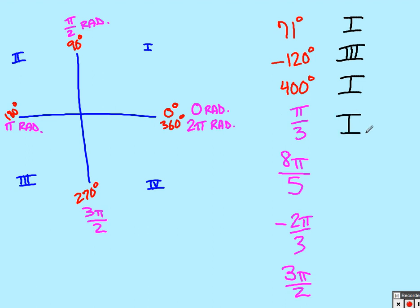For 8π over 5, it's more than π. How much more than π? Is it more than 3π over 2? Yes, it is, so it's going to put me in quadrant 4.